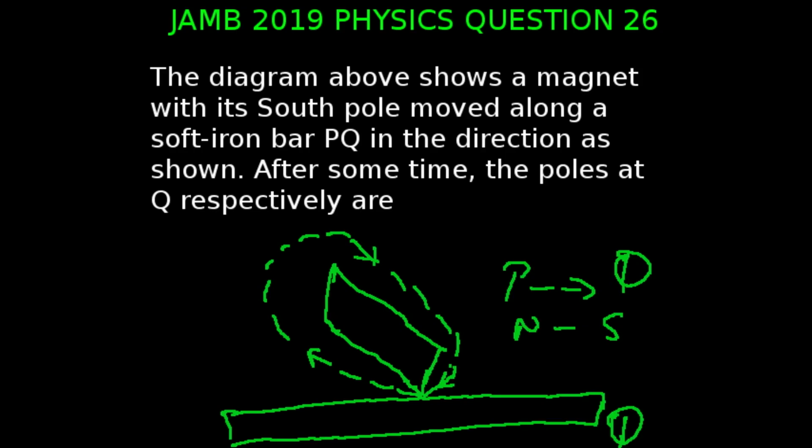Question 26 of the JAMB 2019 physics examination is what you're looking at. The diagram shows a magnet with its south pole moved along a soft iron bar PQ in the direction as shown. After some time, the poles at P and Q respectively are.